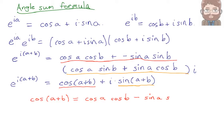And we get the sum formula for sine as well. So sine of a plus b is equal to cosine a sine b plus sine a cosine b.